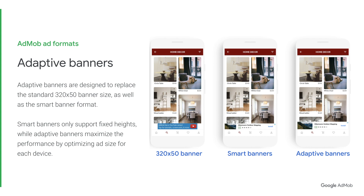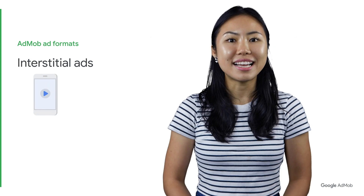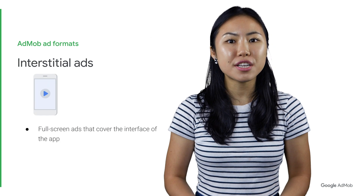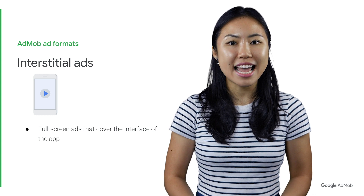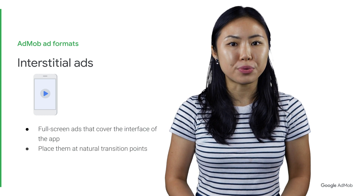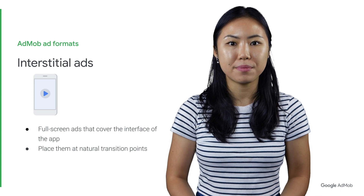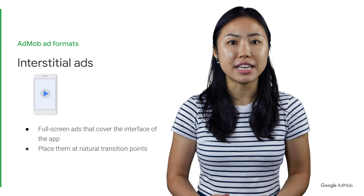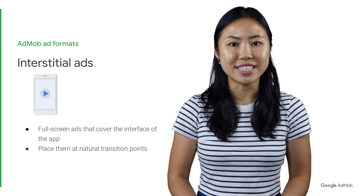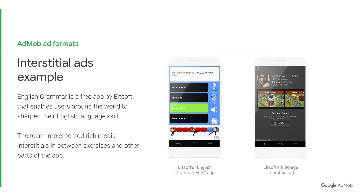If you use banners in your app, consider testing adaptive banners. Now let's move on to interstitial ads. These are full-screen ads that cover the whole screen of your app. These ads work best when placed at natural breaks and transitions in your app. For example, you can place them after users complete a level in a game, or during loading screens. Here's an example from Elsoft, a free English grammar app. They have implemented rich media interstitials in between exercises.